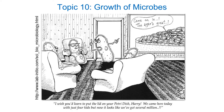E. coli, if it's in perfect conditions in a laboratory setting, can divide every 20 minutes. That means if you put one bacterium on a petri dish, you can end up with a million bacteria in just seven hours. That's not the case in the wild — bacteria in the real world grow much more slowly because there are limiting factors.